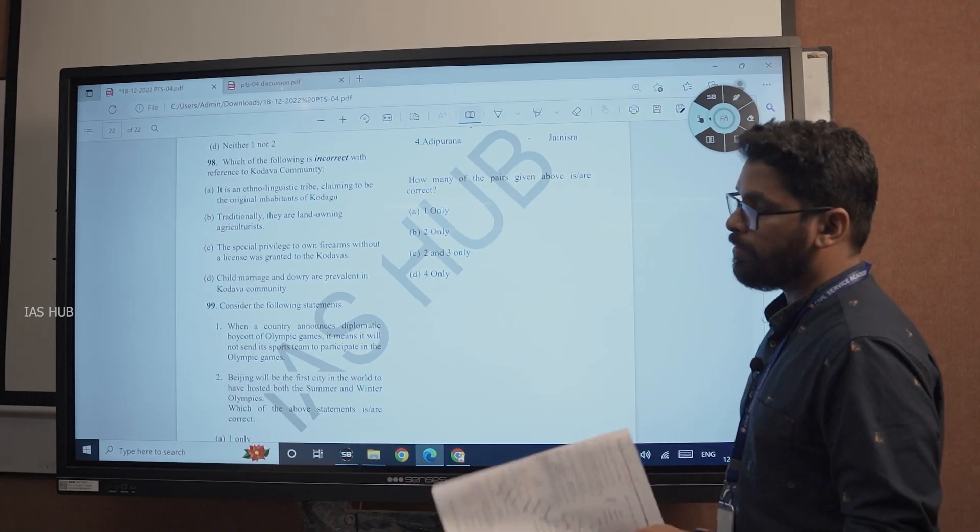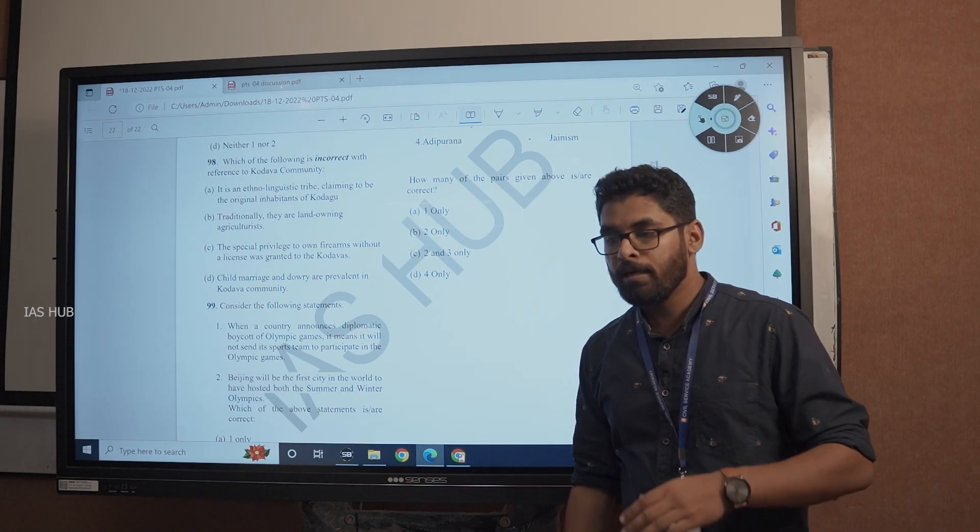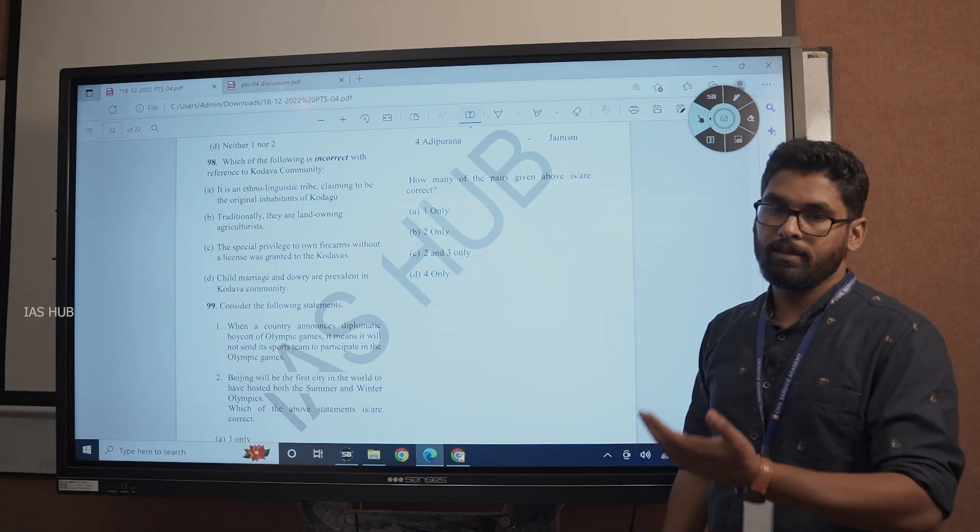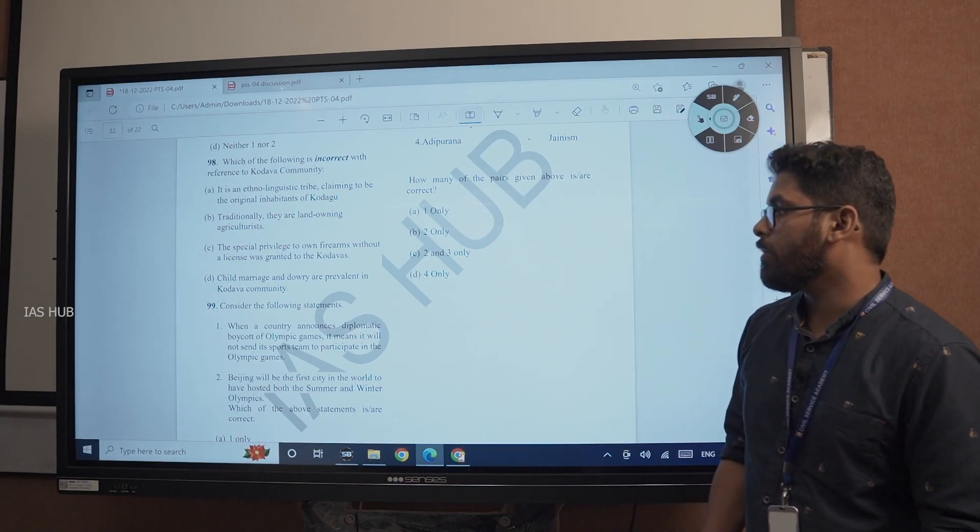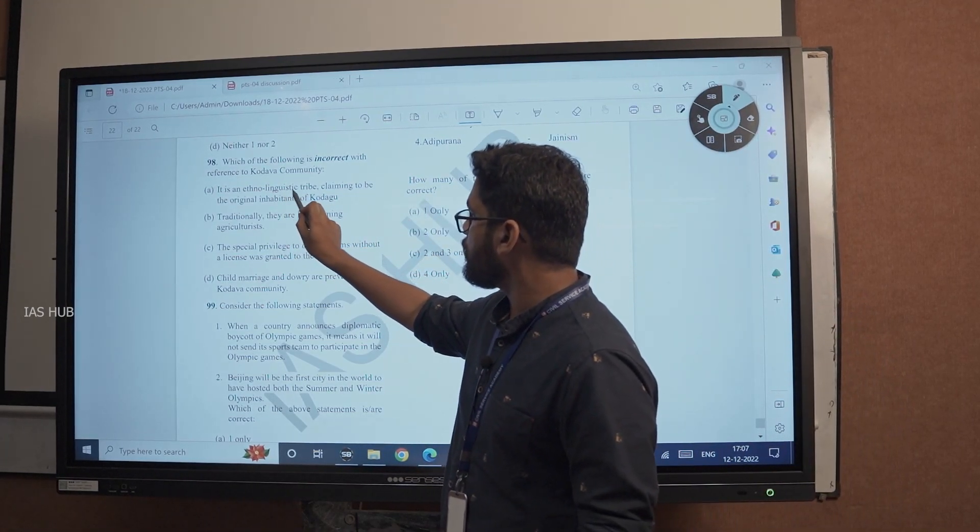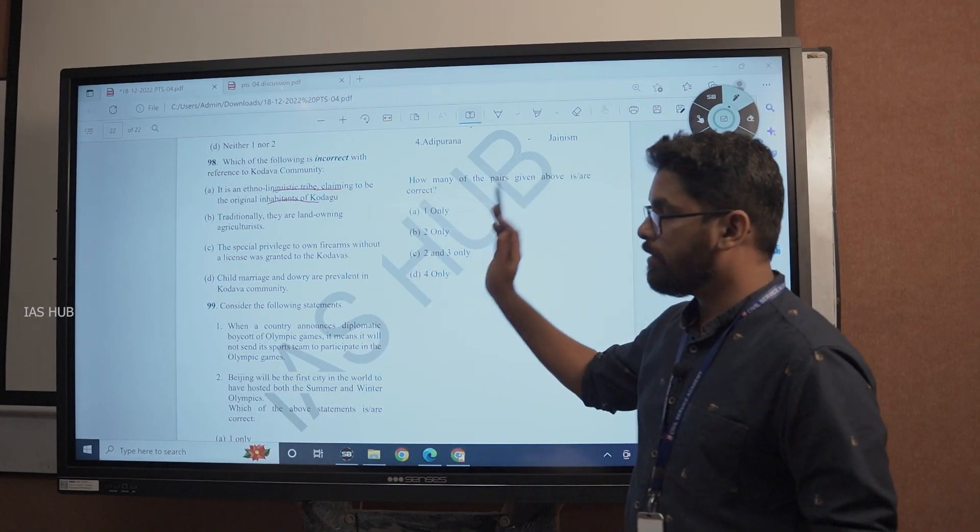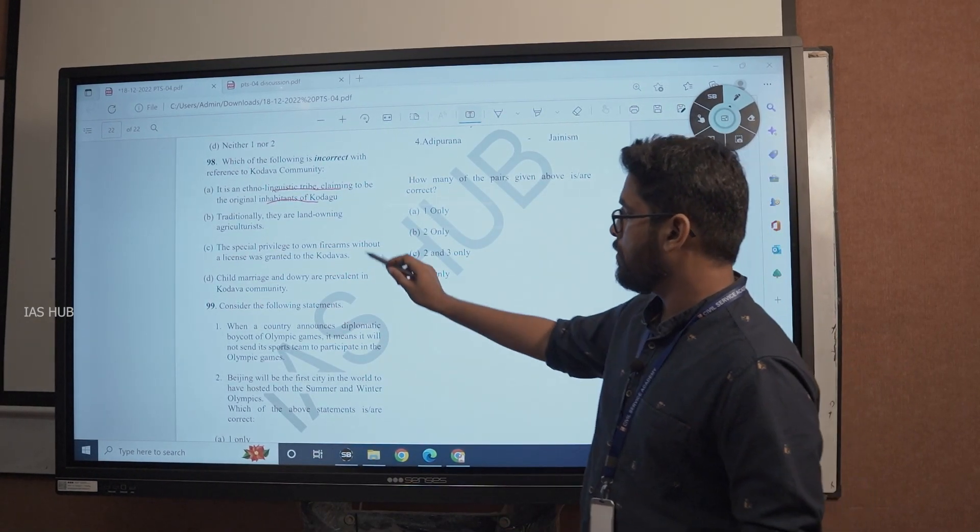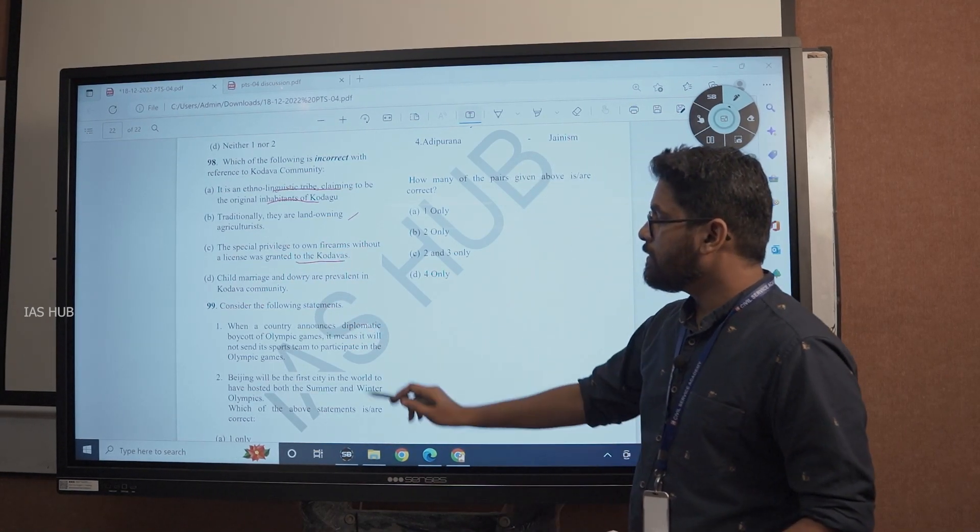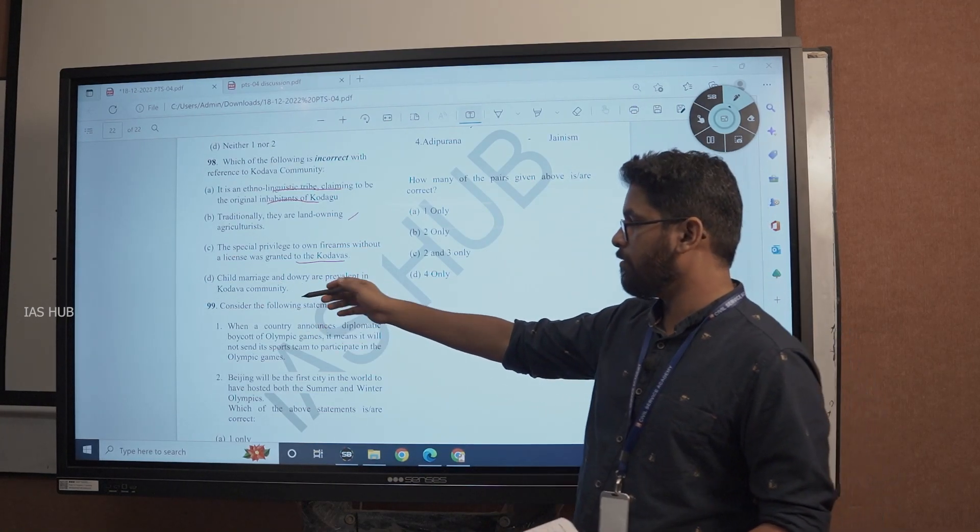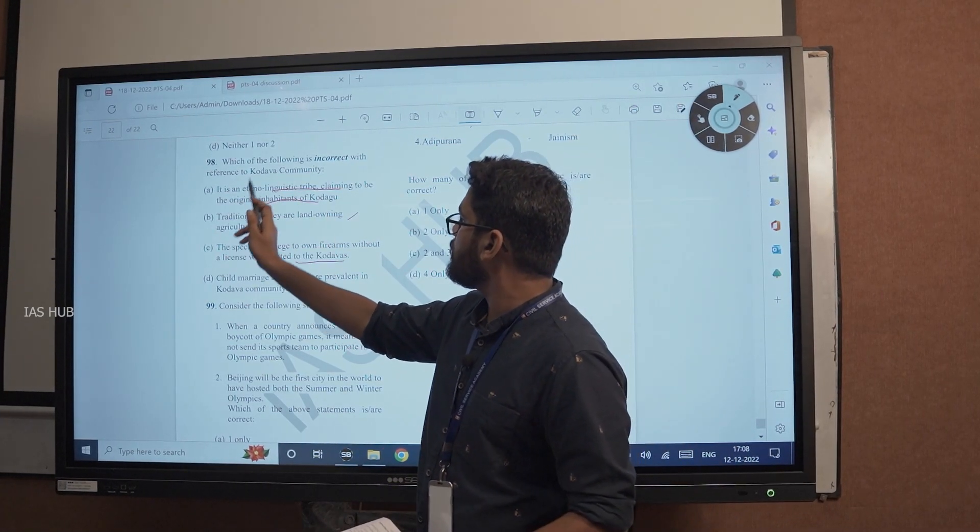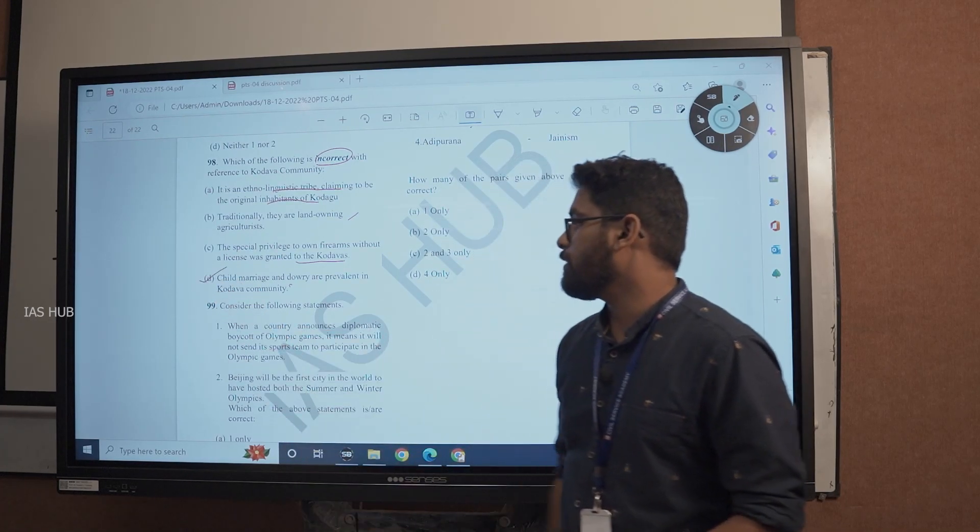Which of the following is incorrect with reference to Codava community? Codava community was recently in news. Someone in Instagram posted maliciously about women in Codava community and their goddess Kaveri in Codava community, so FIR was filed. It is an ethno-linguistic tribe claiming to the original inhabitants of Coorg, Coorg district in Karnataka. Traditionally they are landowning agriculturists. The special privilege to own firearms without license was granted to Codavas. Child marriage and dowry are prevalent. No, they are little progressive. Child marriage and dowry is not prevalent in Codava community. So option D is incorrect.